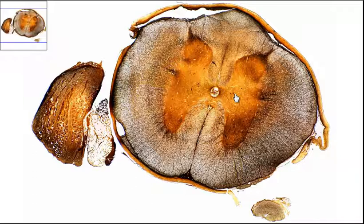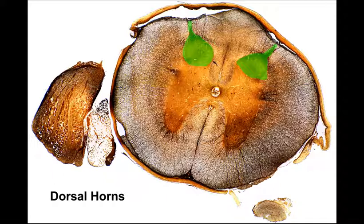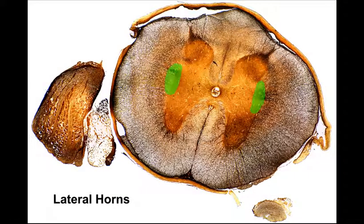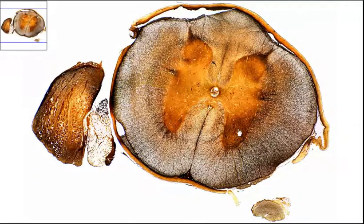In the gray matter itself, we're going to have a dorsal horn, a lateral horn, and a ventral horn. The dorsal horn goes all the way back to the very dorsal edge — you have a dorsal horn on the right side and on the left side. The lateral horn isn't very distinct, but it's this area right here — you have a right and left lateral horn.